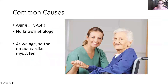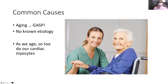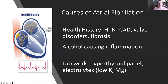Some of the common causes are aging. As our body ages, so too do our cardiomyocytes, and that can lead to AFib. A lot of times we don't have a cause — that's what we mean when we say no known etiology. But there are things in the history that can give us clues as to why a patient might be in atrial fibrillation.